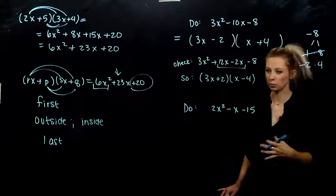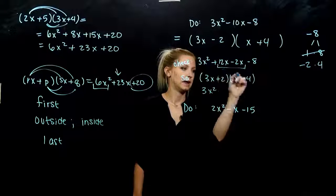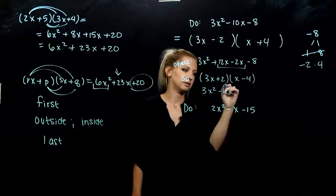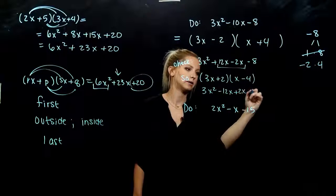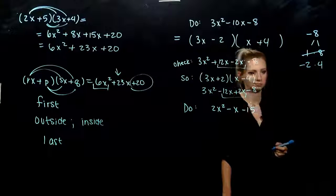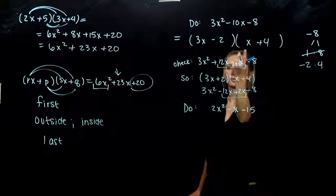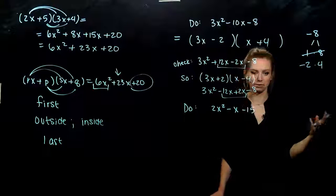And we can double check. FOIL it out and see. First, 3x squared. Outer, minus 12x. Inner, plus 2x. Last, minus 8. We get there with our middle term now. But again, it's just guessing and checking. Trying different combos. Switching these guys around until we get to the right thing.